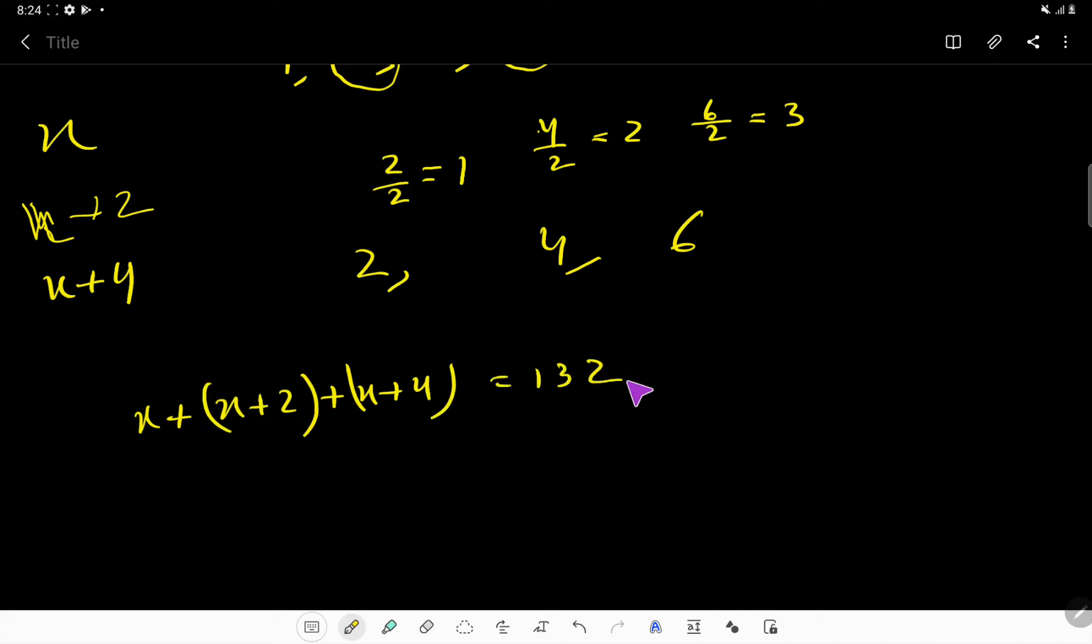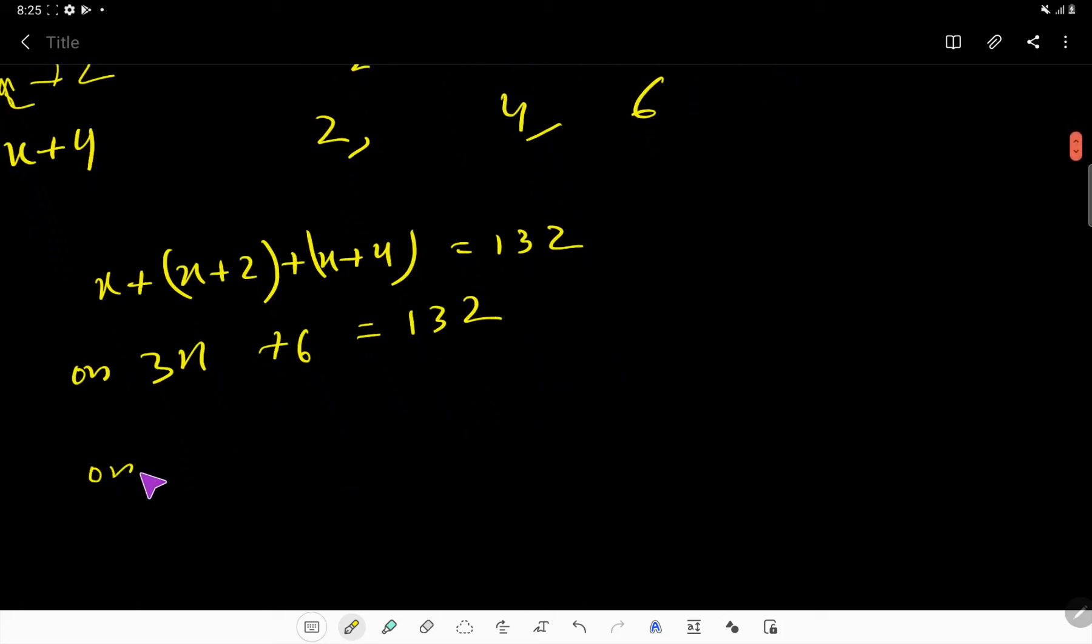Now we have to find out the value for x. x, x, x - that is 3x. Then 2, 4, 6. Now simplify this equation. Deduct 6 from both sides of this equation, so we are getting 3x plus 6 minus 6, that gives us 0.